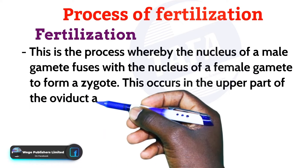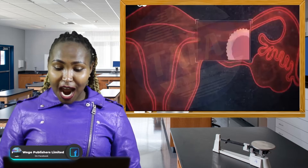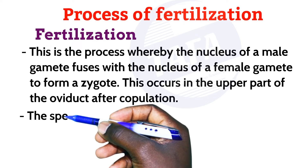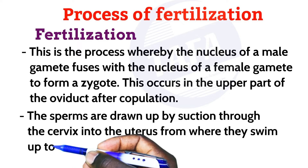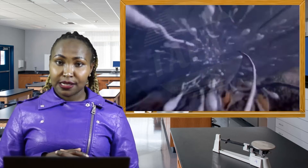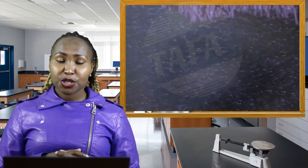This process occurs in the upper part of the oviduct after copulation. After ejaculation, the sperm are drawn up by suction through the cervix into the uterus. From there, the sperm swim up to the oviduct using their tails, with the swimming propulsion brought about by the lashing action of the tail.